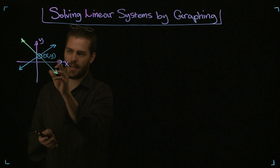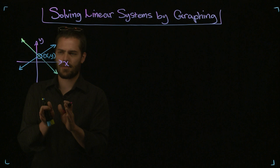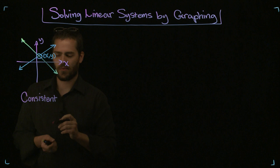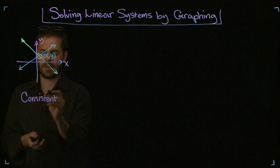Some of the vocabulary that goes along with that, is the following. We can say that this system is consistent, and we're going to say that whenever there is a solution to the system, we're going to say consistent, and in this case, we're also going to say the lines are independent.